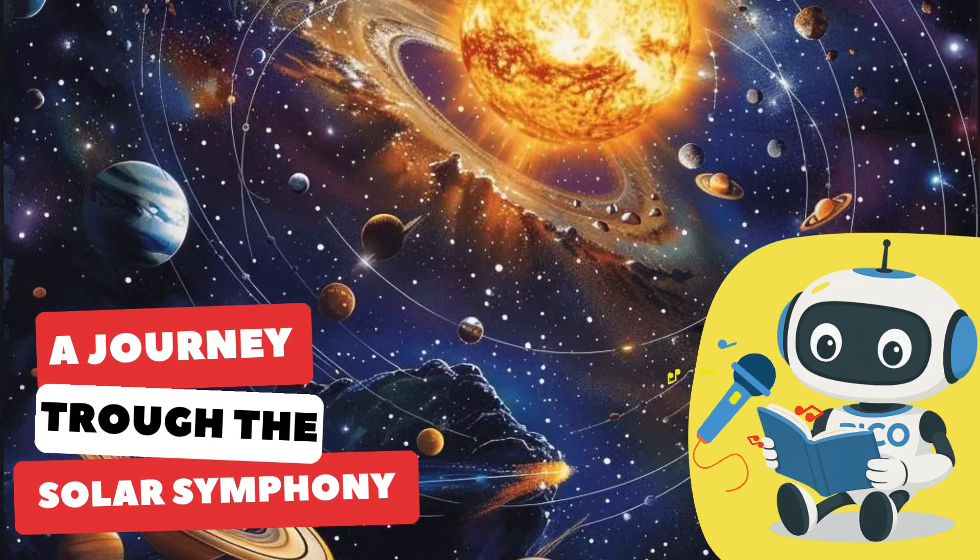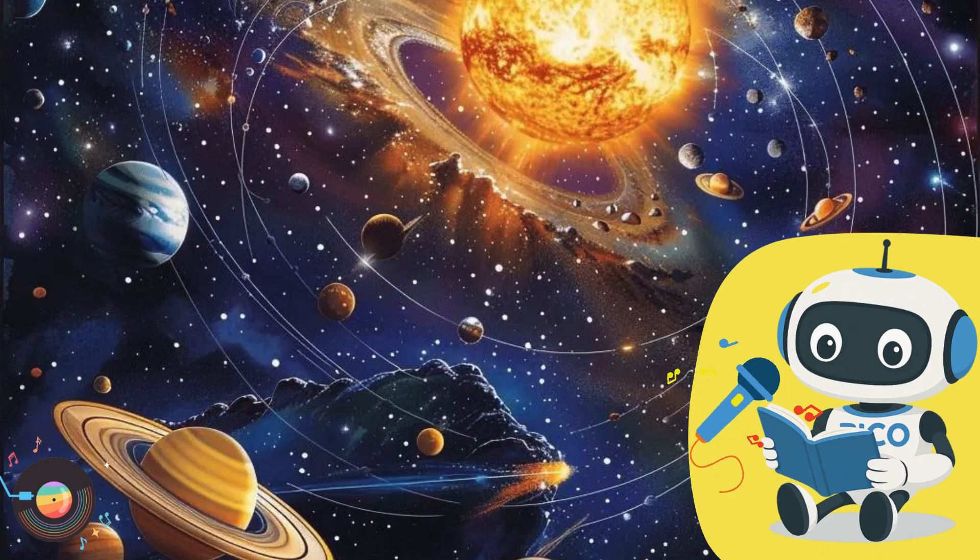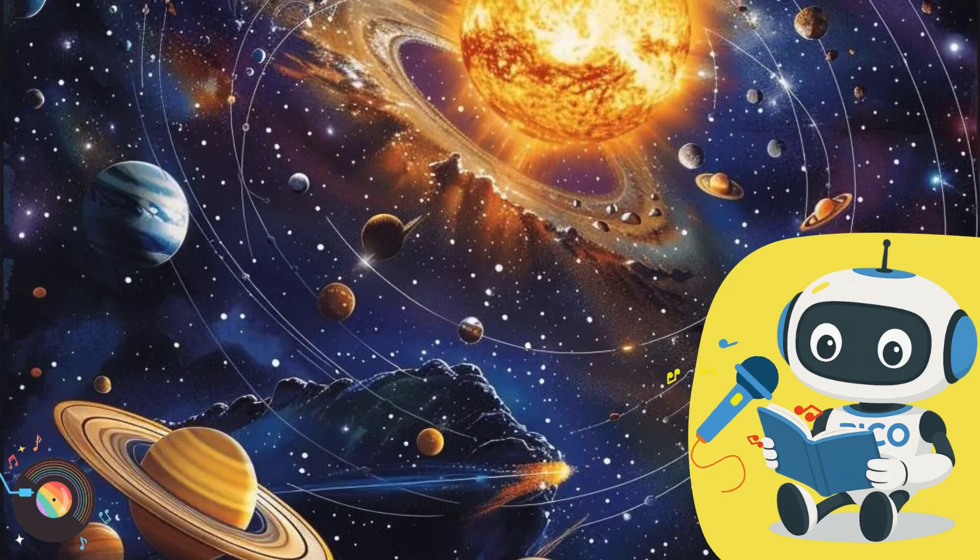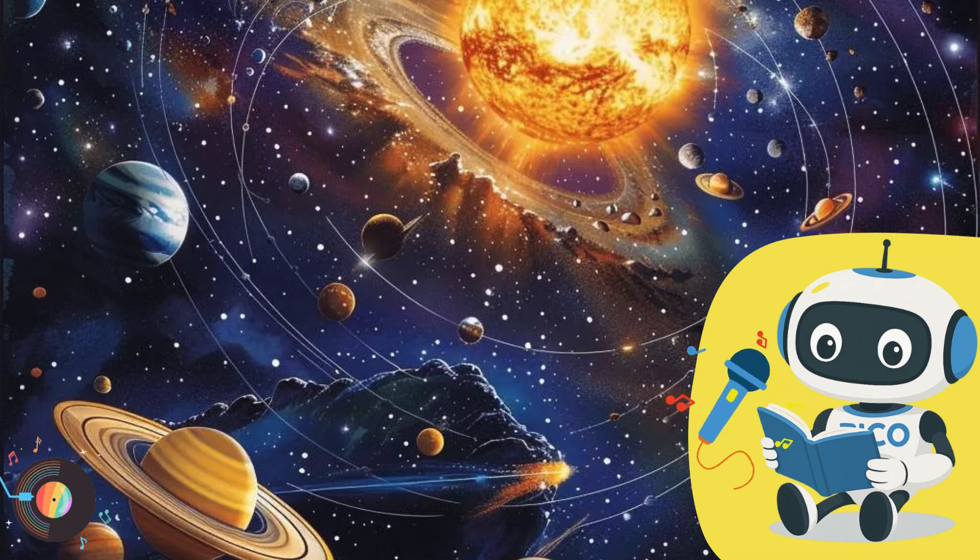Journey through the Solar Symphony. The Solar Explorer drifted silently through the vastness of space, its shiny silver hull glinting as it caught the golden rays of the sun. Captain Zara leaned forward in her seat, her eyes wide with wonder. Outside the observation window, the planets of the solar system stretched out like a giant cosmic orchestra, each playing